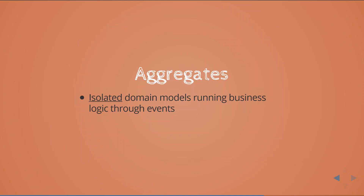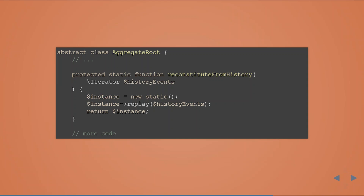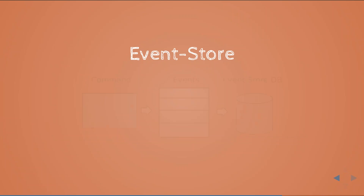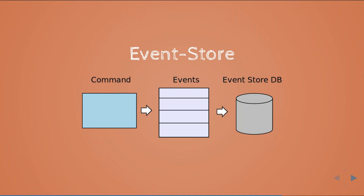Back to our aggregates — we like to reconstitute the aggregate by reapplying a stream of events. The basic function creates a new instance, replays a stream of historic events, and returns the instance. Now that we can update and reconstitute an aggregate root from a history of events, we want to persist it as well — and this is where the event store comes into play. Basically, a command is executed, some events are triggered, and these are recorded to the event store database.